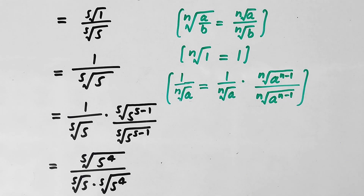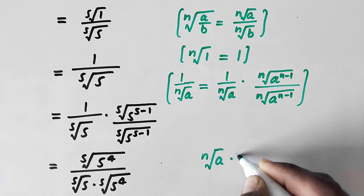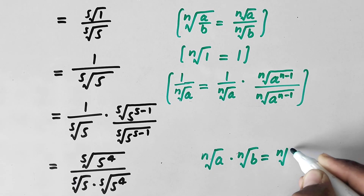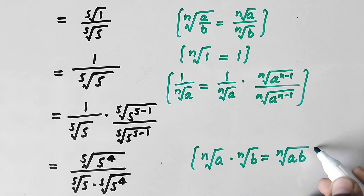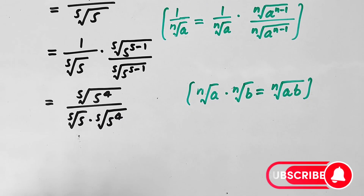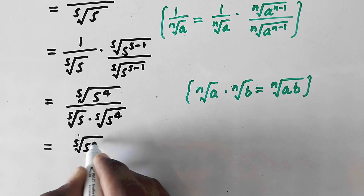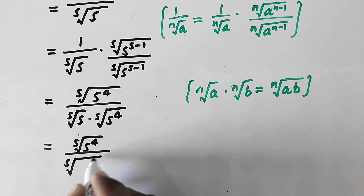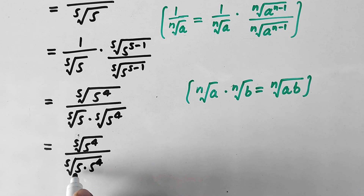We now apply the rule that the nth root of a times the nth root of b equals the nth root of (a·b). Applying this to the denominator, we get the fifth root of 5^4 divided by the fifth root of (5 times 5^4), taking 5 as 5^1.